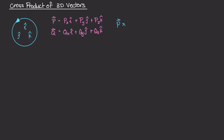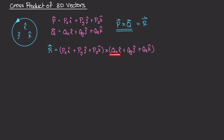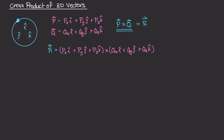So P cross Q — how can we do this with any two vectors in 3D space? What's cool is that we can distribute just like we can with multiplication for all of the different components of P and Q. The cross-products of those operations are going to be handled by this diagram. So if P cross Q gives us some resultant vector R, then R is equal to P cross Q.